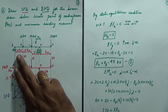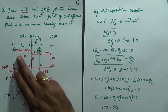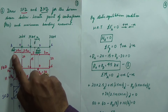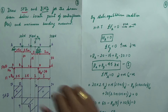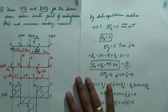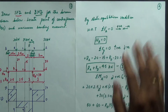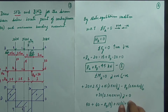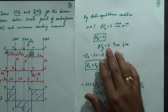The given problem is a beam problem. First, identify how many support reactions there are — one fixed support and one roller support, with three point loads given. The first step is to use static equilibrium conditions: ΣFx = 0, ΣFy = 0, and ΣMA = 0.